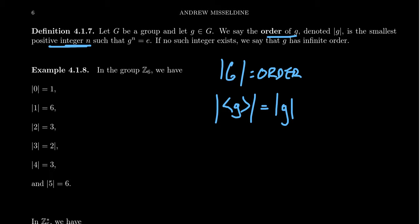We claim the identity element 0 will have order 1. The idea is that if you take the cyclic subgroup generated by 0, you end up with just 0 — there's only one element in there, so you get order 1. This happens in general: the order of the identity is always equal to 1. In fact, an element is the identity if and only if its order equals 1.